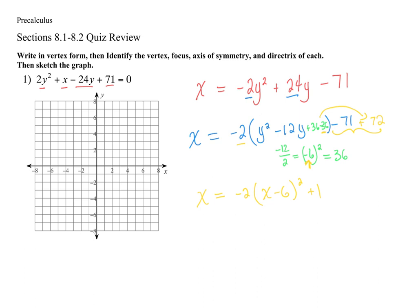Note: that variable inside is y, not x — we don't change it to an x. So now I have it in the form I need. Remember, when it is a y value inside here, this is still my a, which tells me if it's opening left or right and how to find my p. But remember for this one, this is my h and this is my k — when it's a y those are flipped. So my vertex is always (h, k). In this case it's (1, 6) — remember, inside the parentheses it's the opposite sign.